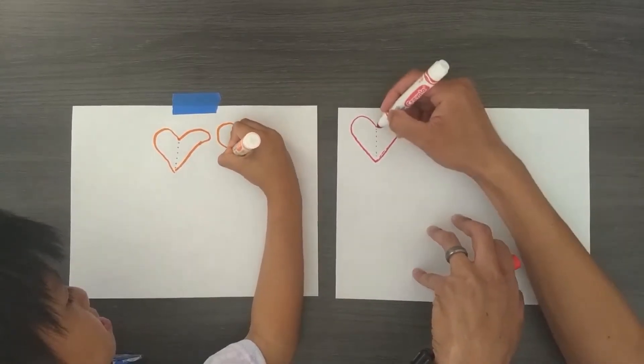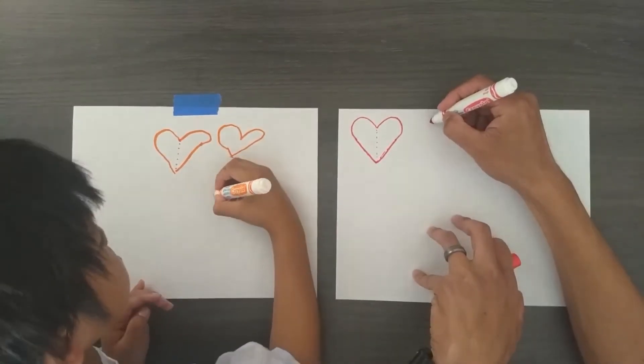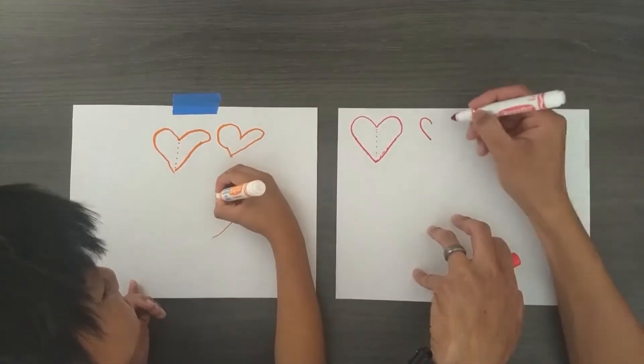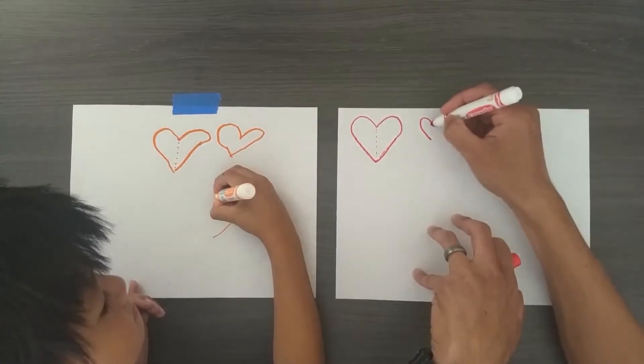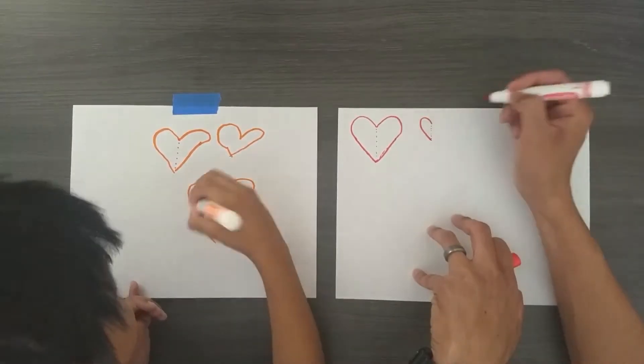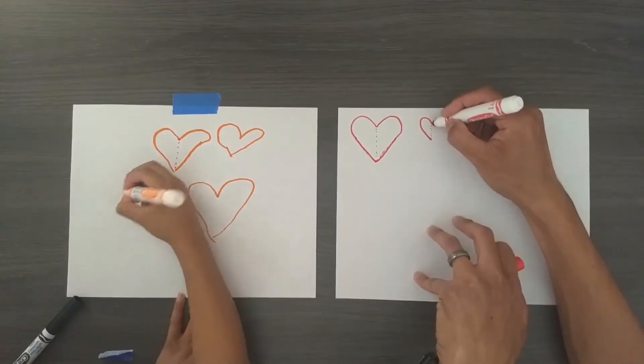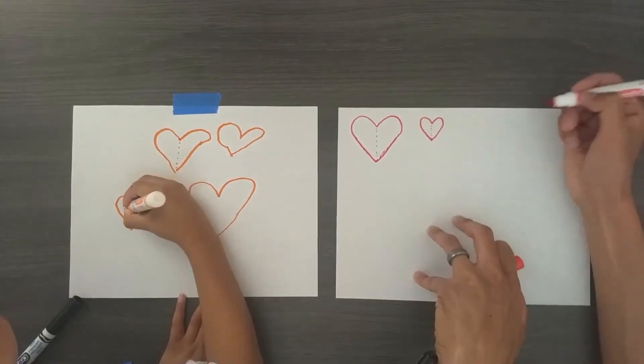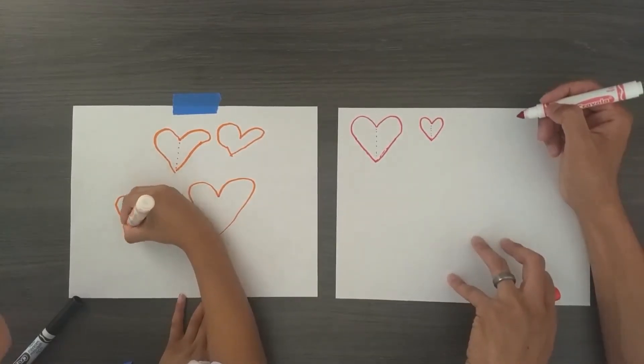And then once you get this shape down, instead of doing the u and the v, you can just do this. Just draw that line all the way down here. And you can have an imaginary dotted line in the middle because you're gonna mirror this on this side. So it's just like that, okay?